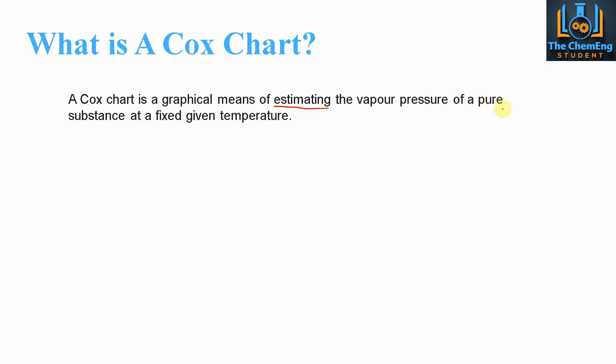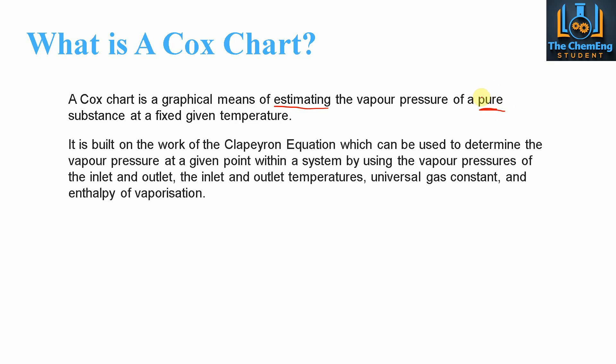The next key word is 'pure'. In order for these systems to work we use a reference compound. A lot of the time we'll use water as a reference compound, and we'll see an example of the Cox chart where water is used as the reference compound. Essentially what we're trying to do here is say that for these systems we are assuming that they are pure substances.